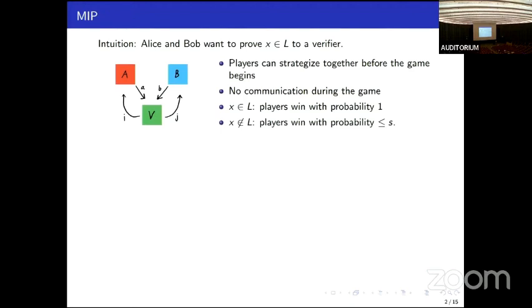An MIP scenario, the intuition here is that Alice and Bob want to prove that a string x is in a language L to a polynomial time verifier. Alice and Bob have unbounded computational power and they can strategize together before the interaction begins, but they're not allowed to communicate during the game. If x is in the language, then there's some strategy that Alice and Bob can employ such that they win with probability one. And if x is not in the language, then no matter what strategy they employ, Alice and Bob can win with probability at most s, which we call the soundness parameter.